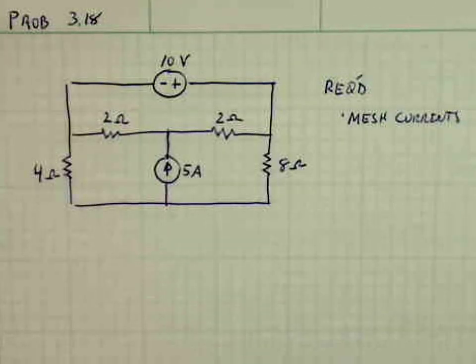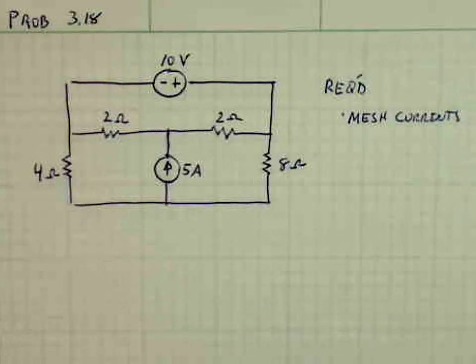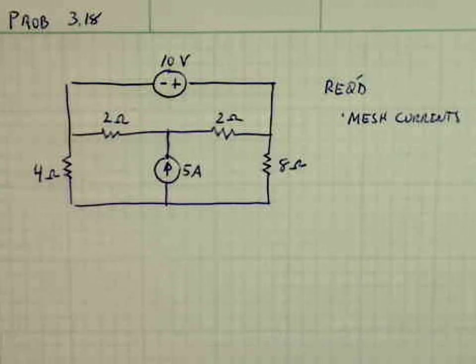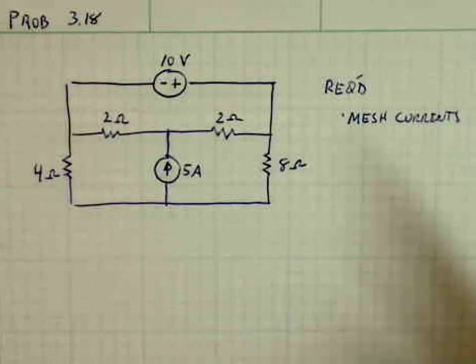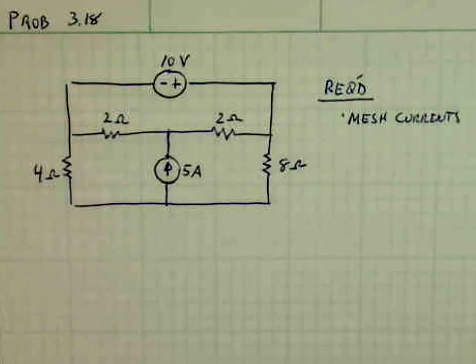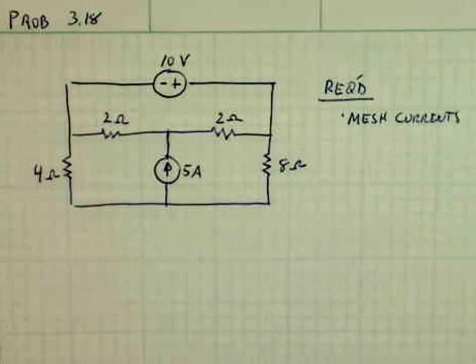Okay, we're going to try problem 3.18 again, but this time using mesh analysis. What we're going to try to find is the mesh currents around each of the three meshes that are in this circuit.